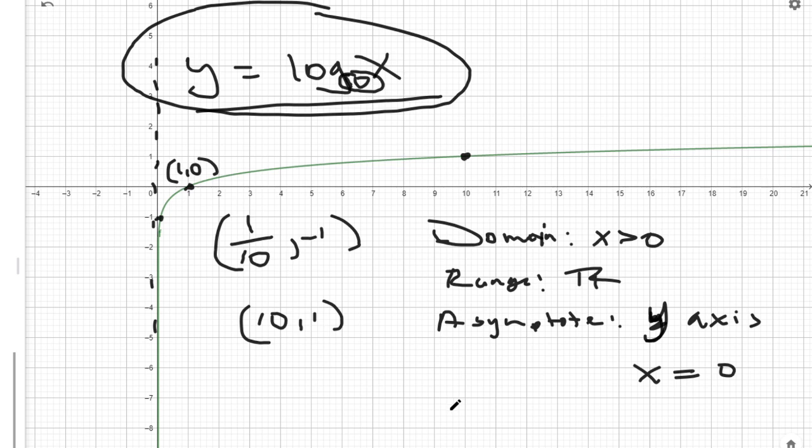Do we have any x-intercepts? We do — we have one x-intercept at (1, 0).